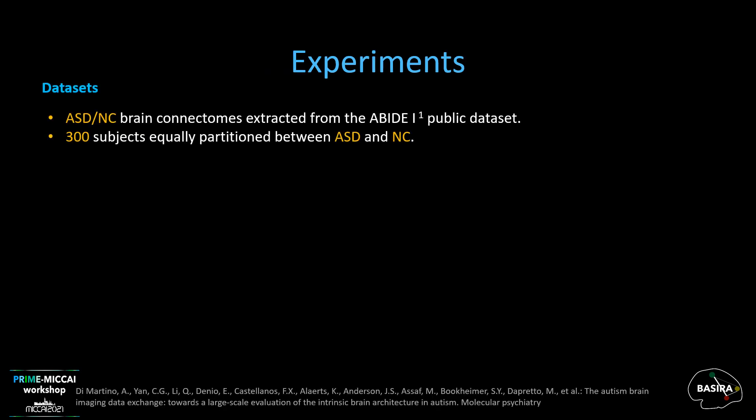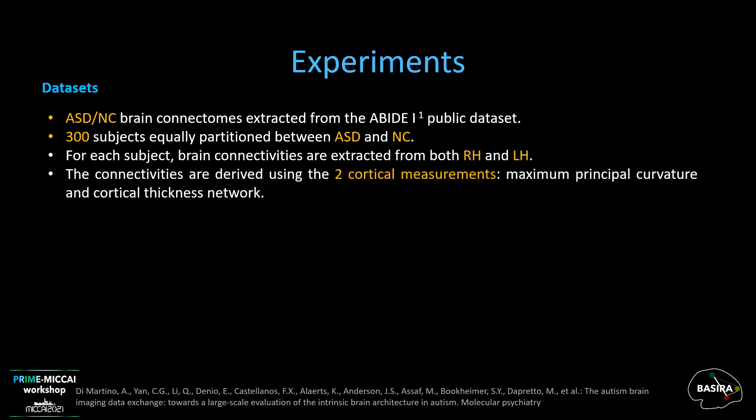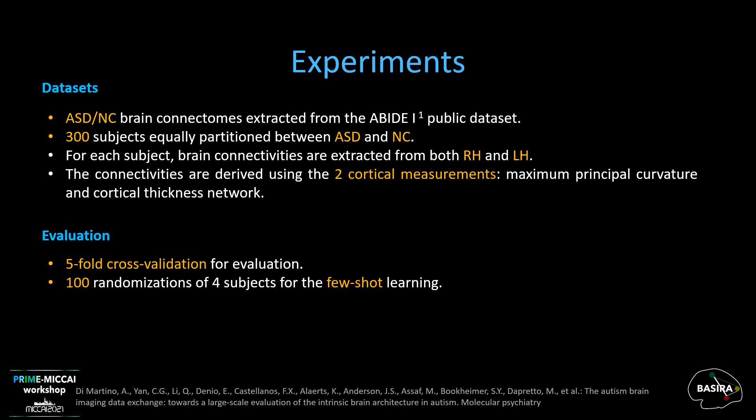We evaluated our reproducibility framework using the ASD-NC dataset including 300 subjects equally partitioned between Autism Spectrum Disorder (ASD) and Normal Control (NC), extracted from the Autism Brain Imaging Data Exchange public dataset. The dataset contains brain connectivities from both right and left hemispheres (RH and LH). Each subject is represented by two cortical brain networks or views derived using the maximum principal curvature and cortical thickness network. To ensure generalizability, we evaluated our models using two settings: five-fold cross-validation training and few-shot learning using only four subjects for training.